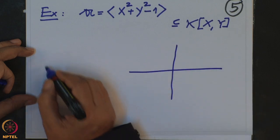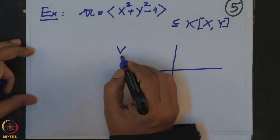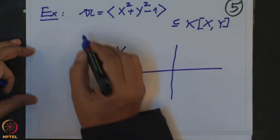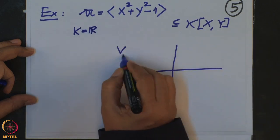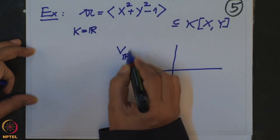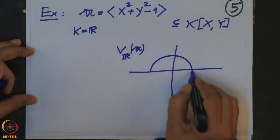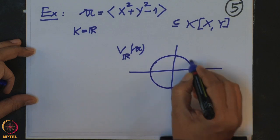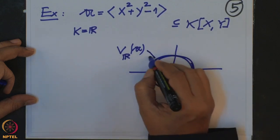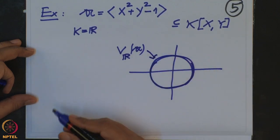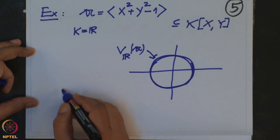So V_K of A in this case is the circle. Now I want to attach a number called a dimension to each algebraic set V = V_K(A), with desirable properties.